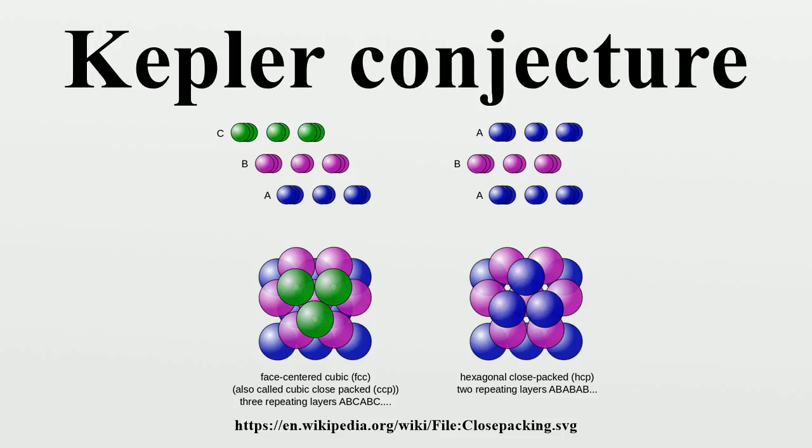At each step there are two choices of where to put the next layer. So this natural method of stacking the spheres creates an uncountably infinite number of equally dense packings, the best known of which are called cubic close packing and hexagonal close packing. Each of these arrangements has an average density. The Kepler conjecture says that this is the best that can be done. No other arrangement of spheres has a higher average density.